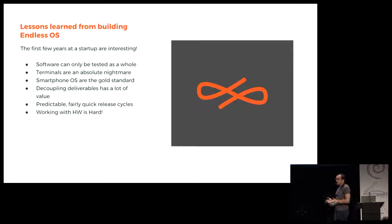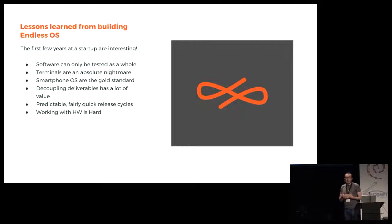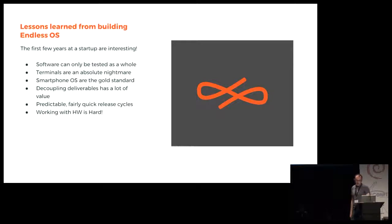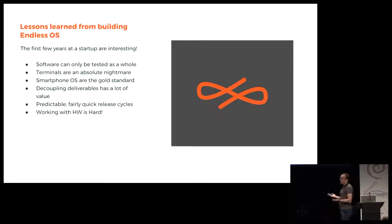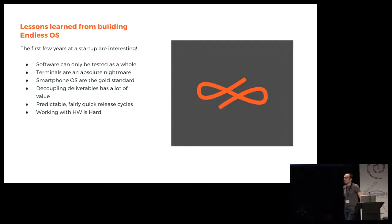Predictable quick release cycles, especially if you work with hardware manufacturers, are very important. The ability to make releases of the operating system very quickly has a lot of value. And working with hardware is hard — it's not just a pun, it's true. There are many requirements that come from working with hardware vendors, and there's always something else that you haven't thought of.